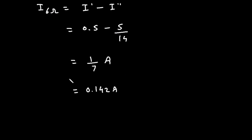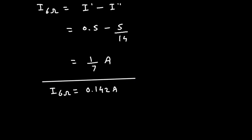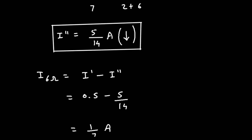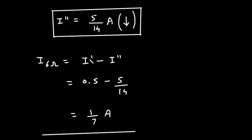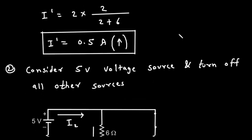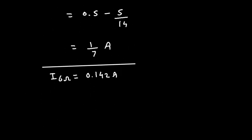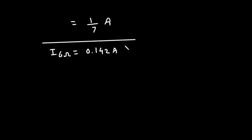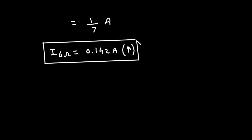This is the current through the 6 ohm resistance. The direction of this current will be upward, following the direction of I prime. This is how we can find the value of current by using the superposition theorem.